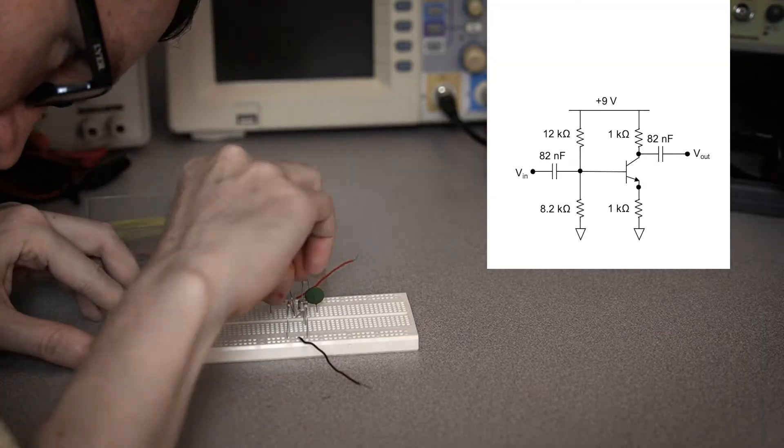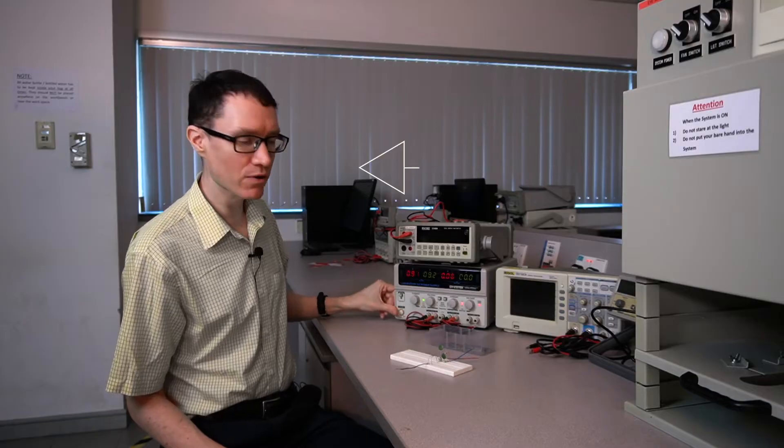That's the circuit I've built right here. To check the gain, we'll hook it up to the DC power supply, run a signal into the base of the transistor, and then check with the oscilloscope what the gain of that signal is.